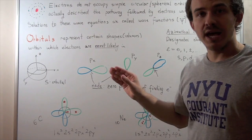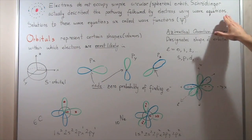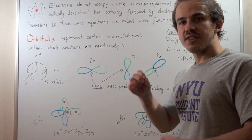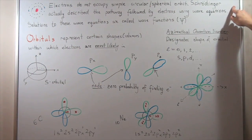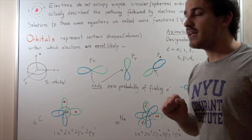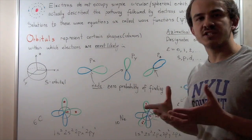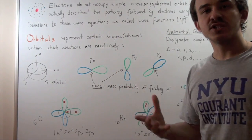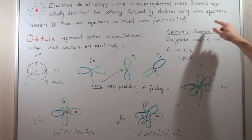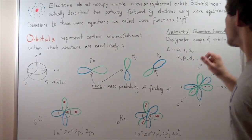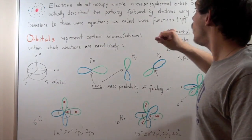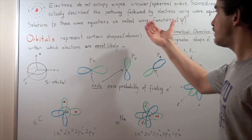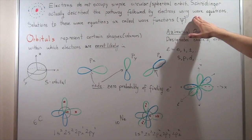Schrödinger described the pathway that our electrons follow using wave equations. Our electrons follow certain orbits and pathways that are not circular, and he described those pathways using wave equations. Wave equations are simply mathematical representations of the pathways that our electrons take. Just like any simple equation, we can solve wave equations for solutions, and the solutions to these wave equations are called wave functions. Orbitals are the same thing as wave functions — orbitals are solutions to these wave equations.